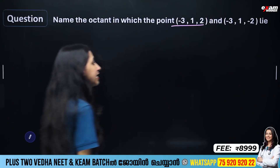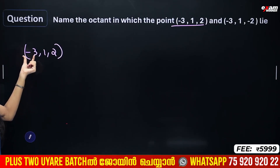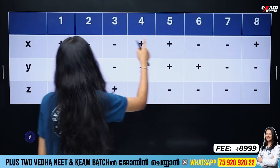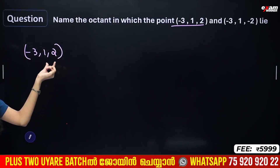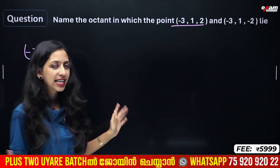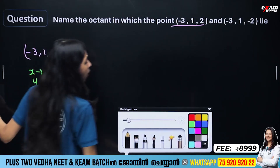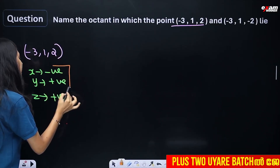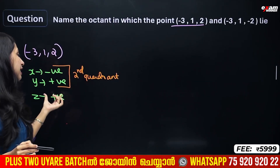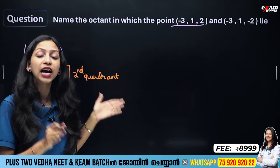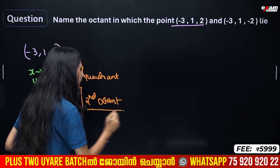Let's take an example. The point is (-3, 1, 2). Here X is negative and Y is positive, so this falls in the second quadrant of the XY plane. Z is also positive, so we call this the second octant.